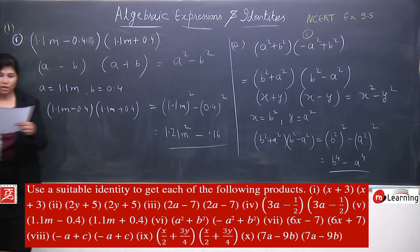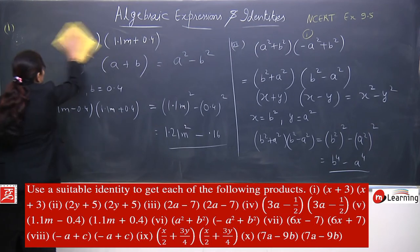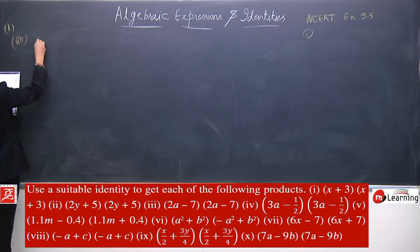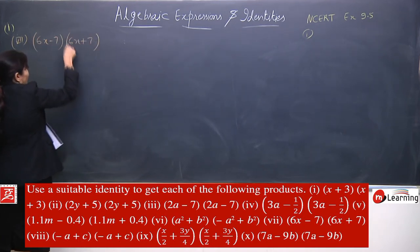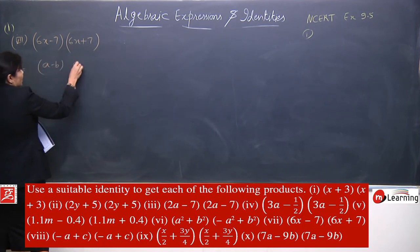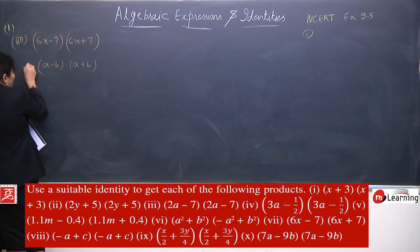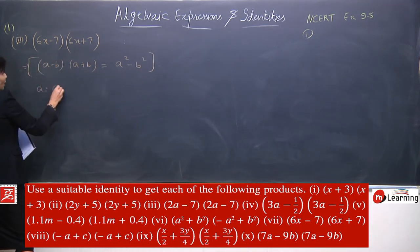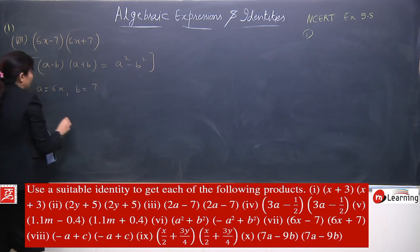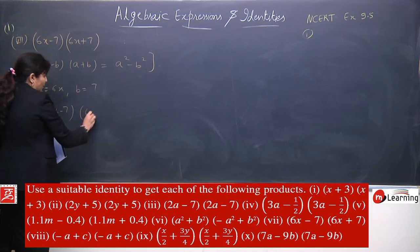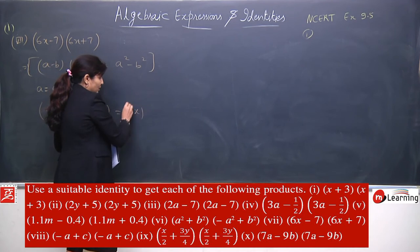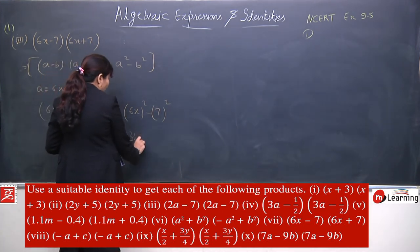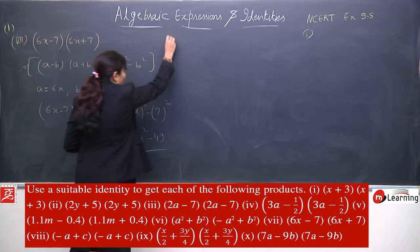Now moving to the 7th part — we are taking all these sums because in each one some identity is being applied. The 7th part is (6x-7)(6x+7). This directly matches identity: (a-b)(a+b) = a² - b². In place of a we have 6x, in place of b we have 7. So (6x-7)(6x+7) = (6x)² - 7² = 36x² - 49. This was very simple — I don't think any explanation is needed.